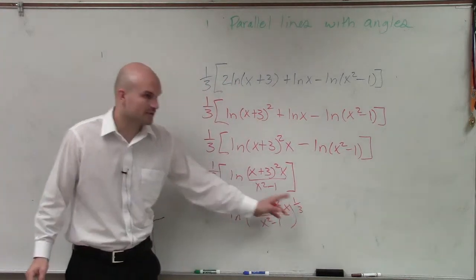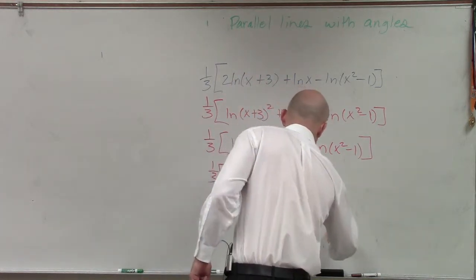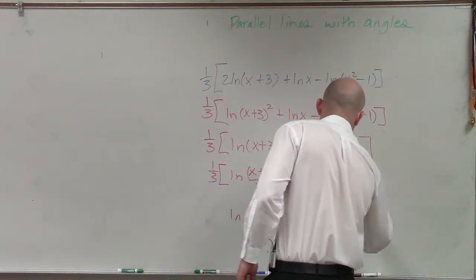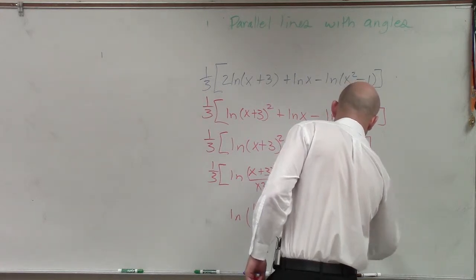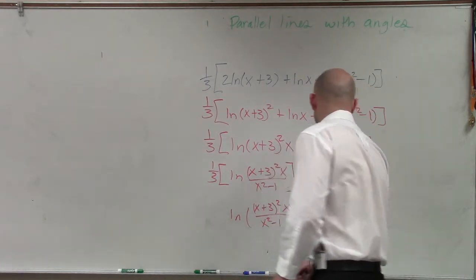And I can rewrite the one-third power as the cube root. So it would be ln of the cube root of x times (x plus 3) squared, divided by (x squared minus 1).